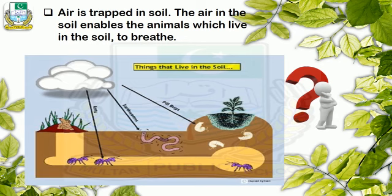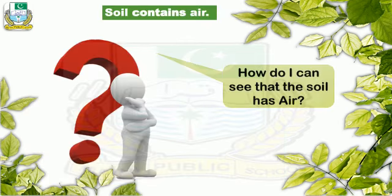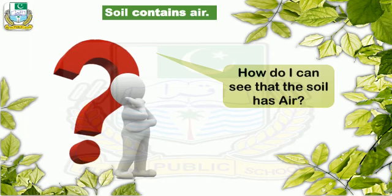Air is trapped in soil, and the air in the soil enables animals to live and breathe. I've provided you this information, but without facts and figures, don't believe it. How can I see that the soil has air? Air has no color, no smell, no shape — so how can I know? Think about it. Let's move to the experiment.